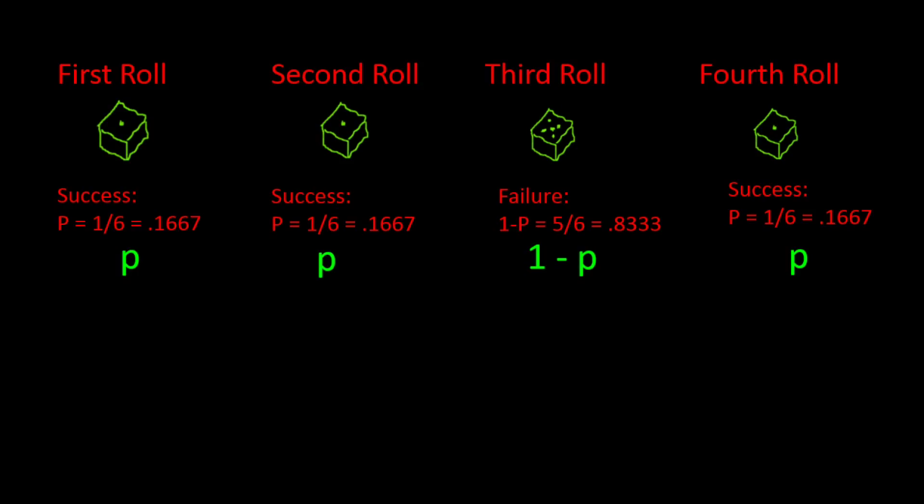And finally, let's take a look at property 4 — that the outcomes are independent of each other. If we roll a 1 on the first trial, will that change the probability of rolling a 1 on the second trial? No, of course not. The probability is still 1 out of 6. So all four properties are satisfied.